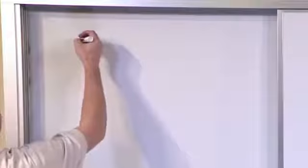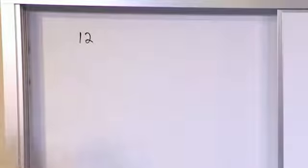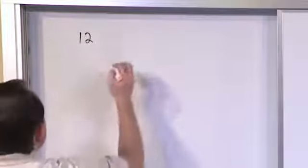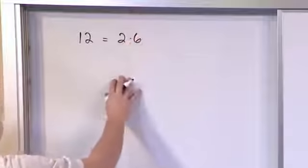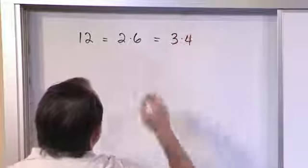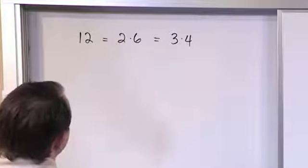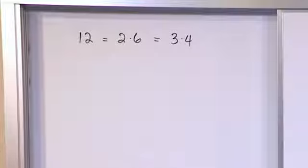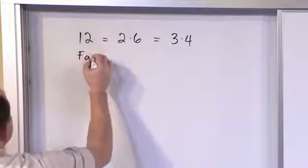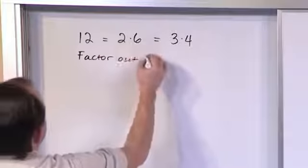Let's talk about some numbers before we talk about any letters. What about the number 12? There are multiple ways to write it: as 12, as 2 times 6, as 3 times 4, or as 1 times 12. So if I ask you to take 12 and factor out a 3, the word factor means pull out — so I'm telling you to pull out a 3.